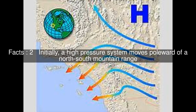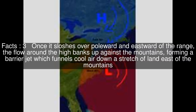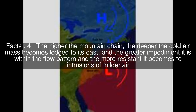Initially, a high-pressure system moves poleward of a north-south mountain range. Once it sloshes over poleward and eastward of the range, the flow around the high banks up against the mountains, forming a barrier jet which funnels cool air down a stretch of land east of the mountains. The higher the mountain chain, the deeper the cold air mass becomes lodged to its east, and the greater impediment it is within the flow pattern and the more resistant it becomes to intrusions of milder air.